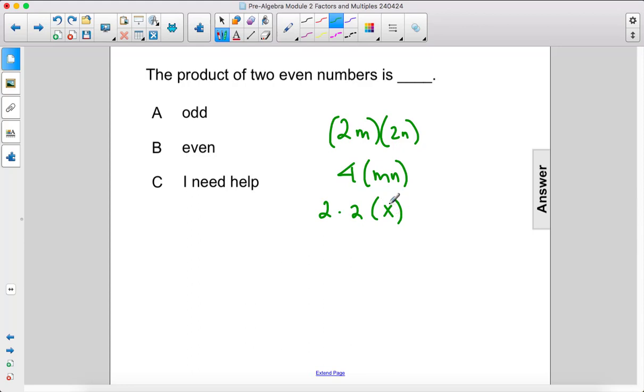So we have an integer. It could be odd or even, it doesn't matter. Any integer times 2 is even. Now that means this is an even integer times 2, still an even integer.